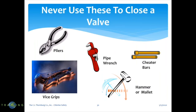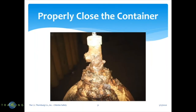Never use these tools to close or open a valve: don't use pliers, vice grips, pipe wrenches, hammers, teeter bars, or anything like that. We have chlorine wrenches specifically designed for opening and closing the valves on cylinders. When you are done with a chlorine or sulfur cylinder, make sure that you close the valve properly and close it tight so it does not leak.